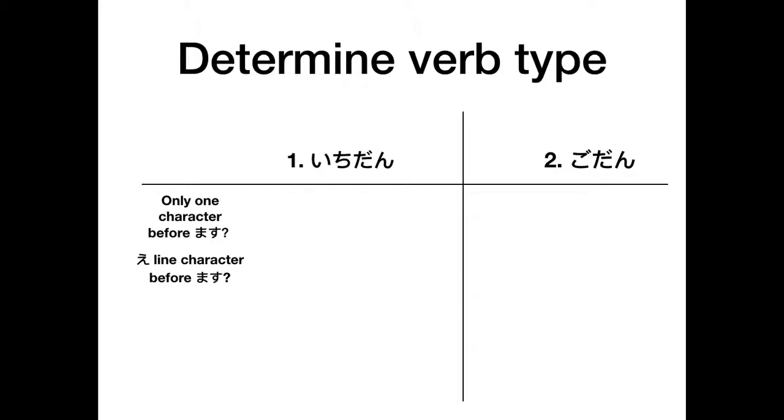The first step that you need to know is how to determine verb type. There's two types of verbs that we're looking at, and we're going to be looking at them from the masu form.